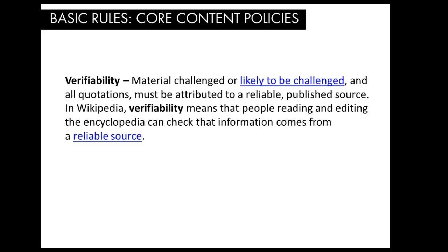The second core content policy is that all content must be verifiable. The burden to demonstrate verifiability lies with the editor who adds or edits material on Wikipedia. Verifiability is satisfied by citing a reliable source that is directly related to the content added or edited. This is why Part 2 of this series focused on adding citations and references to Wikipedia — it is one of the most important tools in your toolkit. Verifying the information you add will help ensure your articles don't get challenged, or worse, deleted.